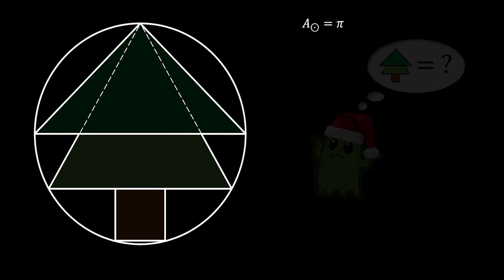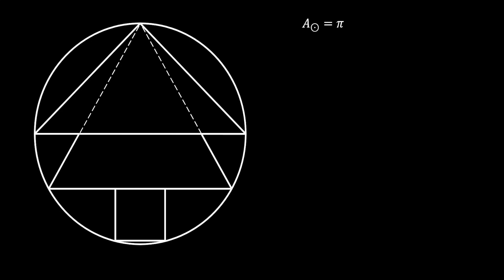Alright, so let's solve this problem. First, I'm just going to mark the center of the circle. I'm not going to label the vertices of our sketch, because I think it is unnecessary. But if you guys want to do it for yourself, I leave that to you. Next, I'm going to find the radius of this circle. We know that the area is equal to pi r squared, and we know that our area equals pi. This means that r squared is equal to 1, which means that the radius of this big circle equals 1.